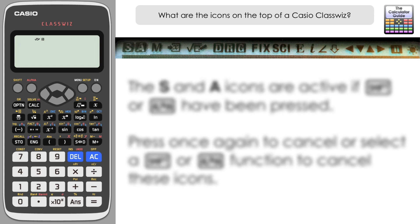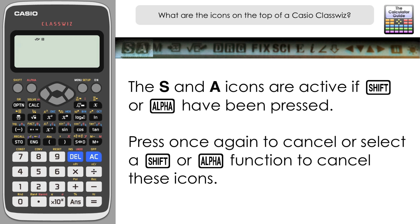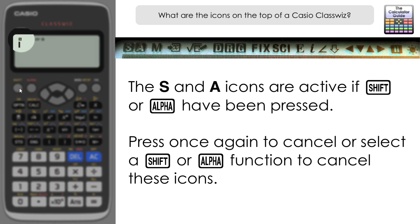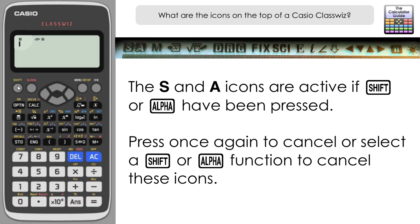On the left hand side we have an S and an A. These indicate when you have activated either the shift or the alpha button, so that you can access the shift or alpha features on the different buttons of the calculator. You press it once to activate it, and if you press it again it deactivates it, or if you select your shift or alpha function that will also deselect shift.